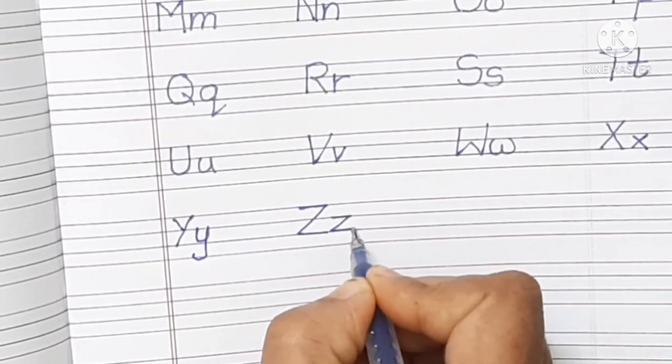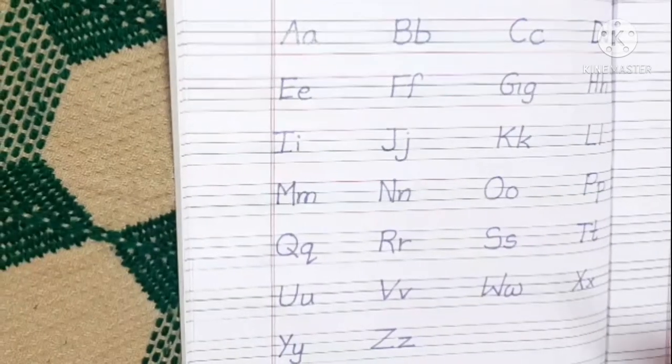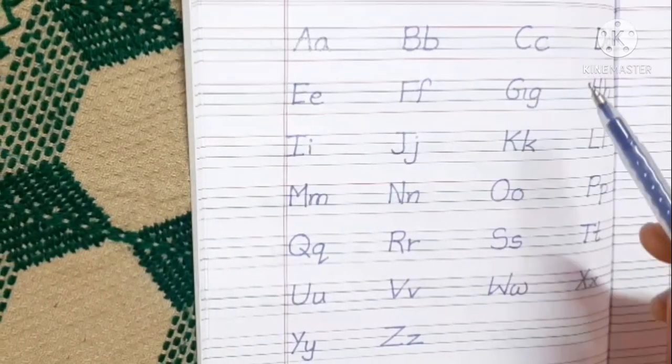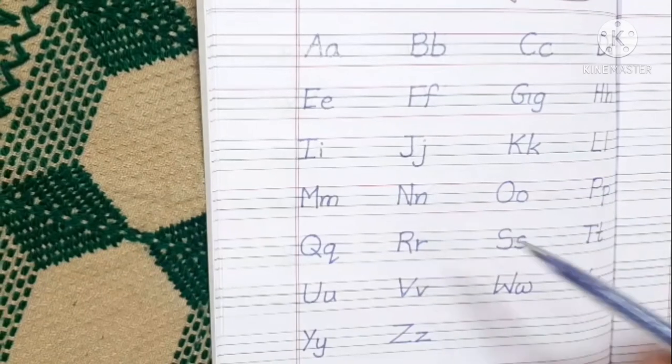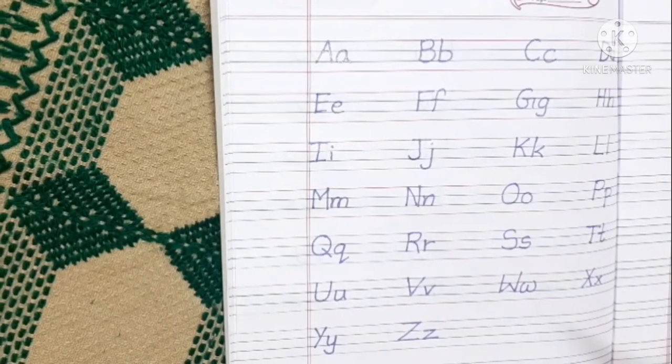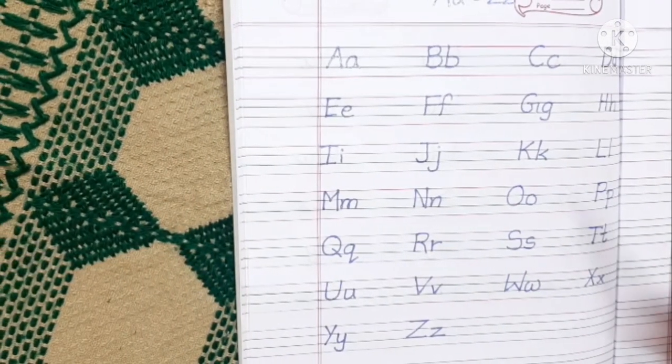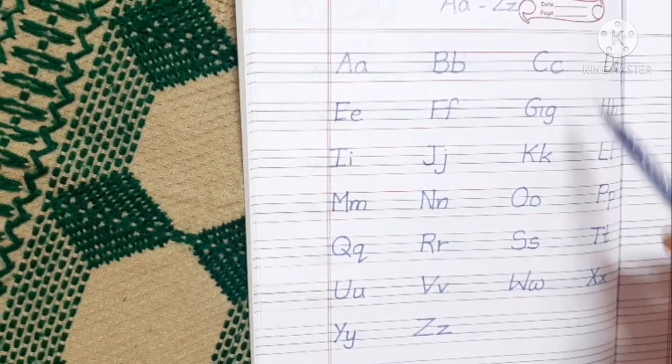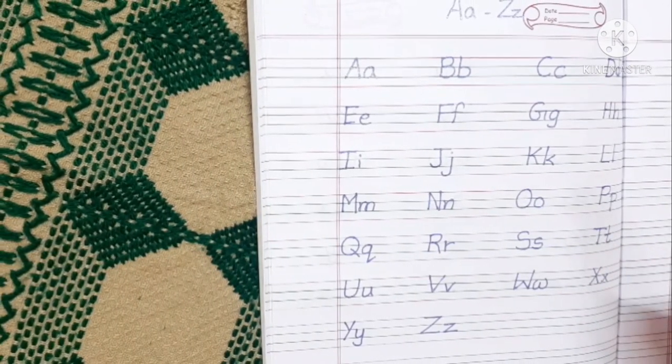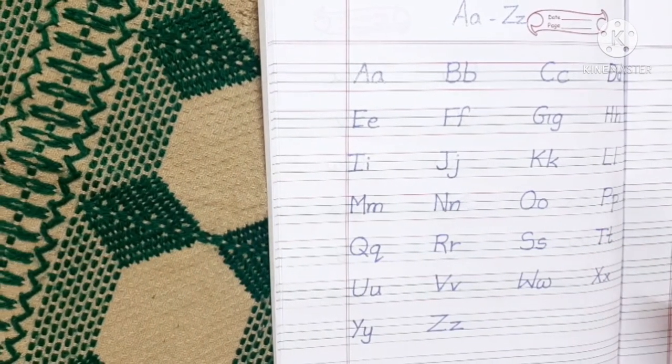So children, these are the 26 alphabets from A to Z. Hope you all have understood. While writing, please follow these four lines for writing English alphabets. Thank you children, bye bye.